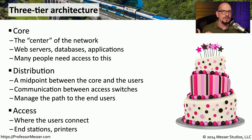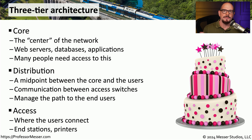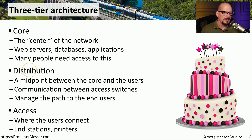Lastly, our users need somewhere to connect, and they often connect to an access layer. These are switches that are usually located very close to the user — usually on the same floor of a building, for example — and that access layer allows us to connect to the distribution, which then connects to the core of the network.